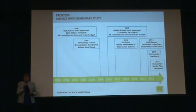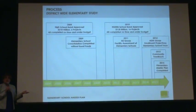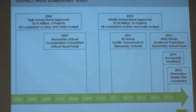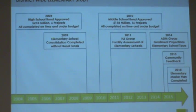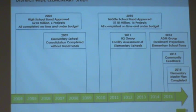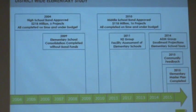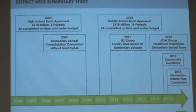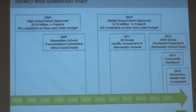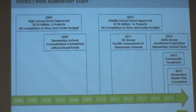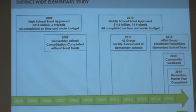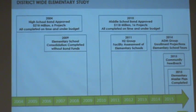In 2004, there was a high school bond approved for $218 million — six projects, all completed on time and under budget. In 2009, elementary school consolidation was completed without bond funds. In 2010, a middle school bond was approved for $118 million, including 16 projects, again all completed on time and within budget. In 2011, the H2 Group did a facility assessment of the elementary schools, and in 2014 ADM Group did its assessment, bringing us to 2015 and community feedback.